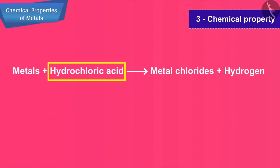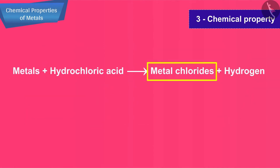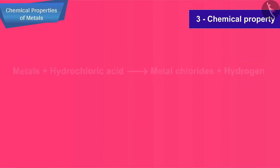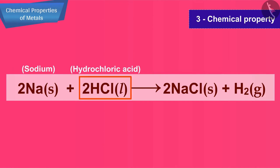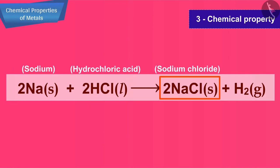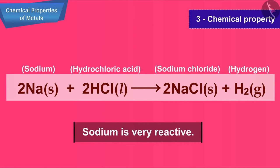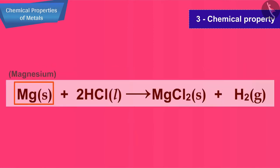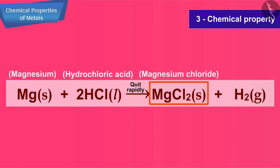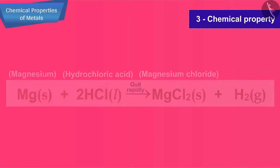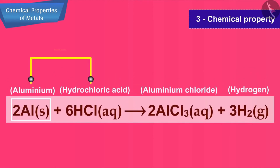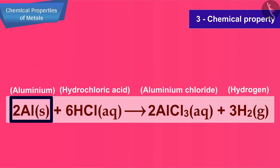Metals react with dilute hydrochloric acid to give metal chlorides and hydrogen gas. Sodium metal reacts violently with dilute hydrochloric acid to form sodium chloride and hydrogen. This reaction shows that sodium is very reactive. Magnesium also reacts quite rapidly with dilute hydrochloric acid, forming magnesium chloride and hydrogen gas.